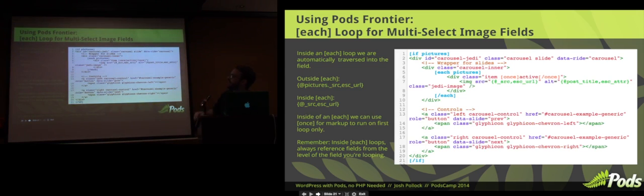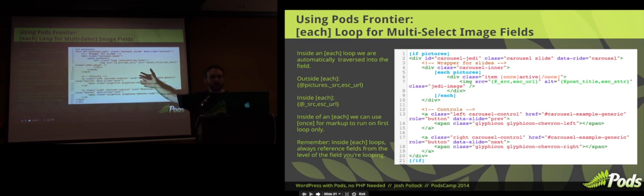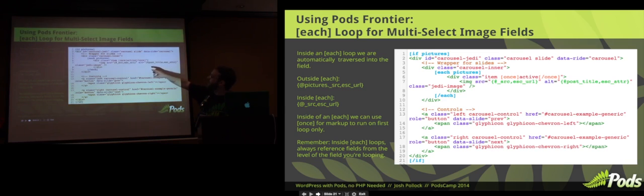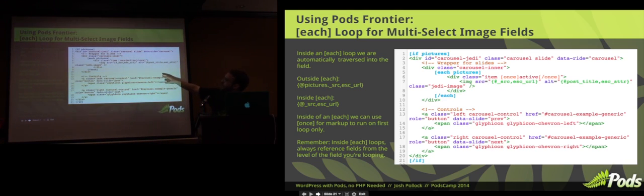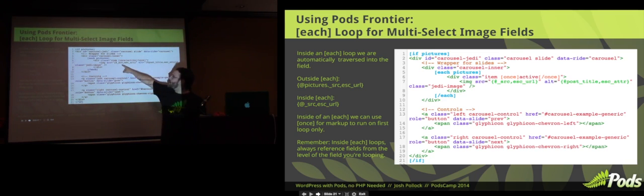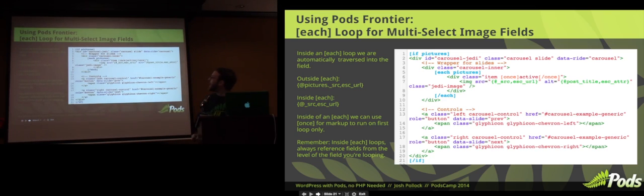Now we combine all these things and add each. This is an example of building a Bootstrap carousel slider. I start with if pictures, because I don't want the controls for a slider if I don't have any images. I do my wrapping markup and then get into each, because pictures is a multi-select field. Because we're already inside the pictures field via each, I don't need the extra dot traverse — before I would say pictures.source, but now I can go directly to source. Writing the HTML markup and done — it's the equivalent of a PHP foreach loop, but this simple.